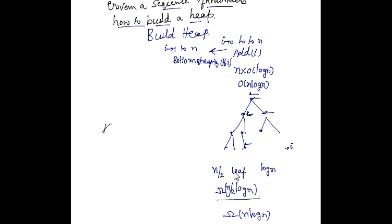We want to think of an algorithm which can build the heap in linear time, so adding one by one is not a good option. Let's flip this and consider the following: at any point of time, we consider a node and assume that the left subtree as well as the right subtree are both heaps. Now we call the top-down heapify from this particular node so that the entire tree satisfies the heap property.